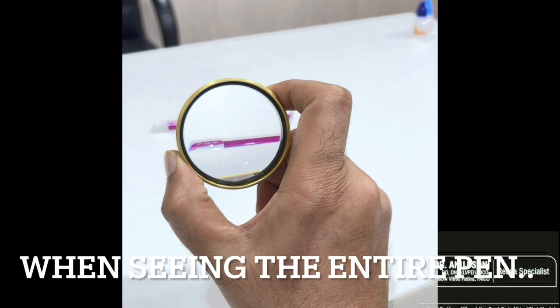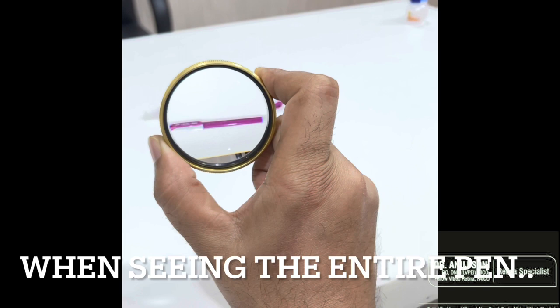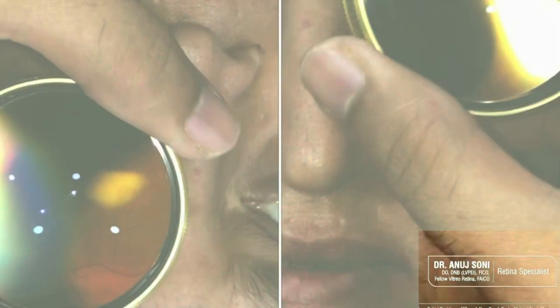Now if you are seeing this pen in entirety, you will see the entire pen is inverted and that is what happens when seeing the posterior pole. At the posterior pole, whatever appears superior is inferior and what is inferior is superior.